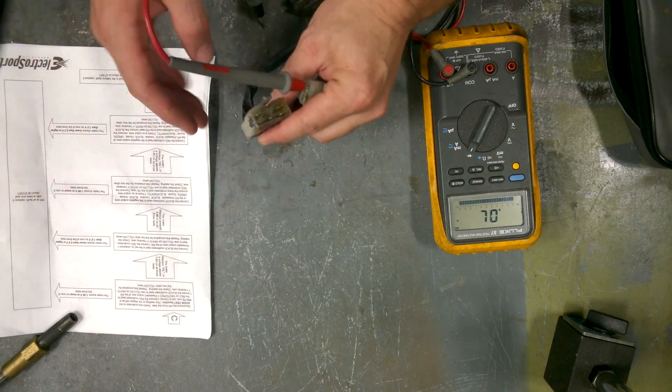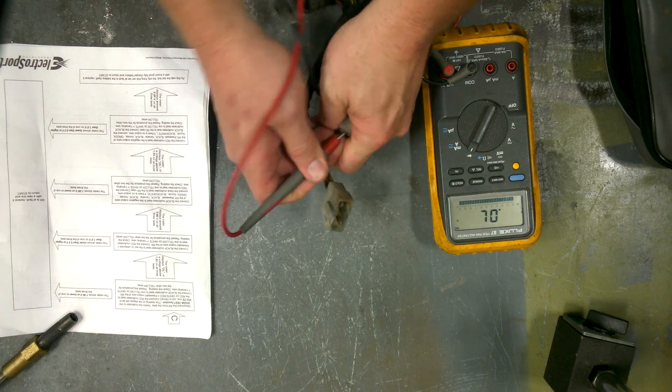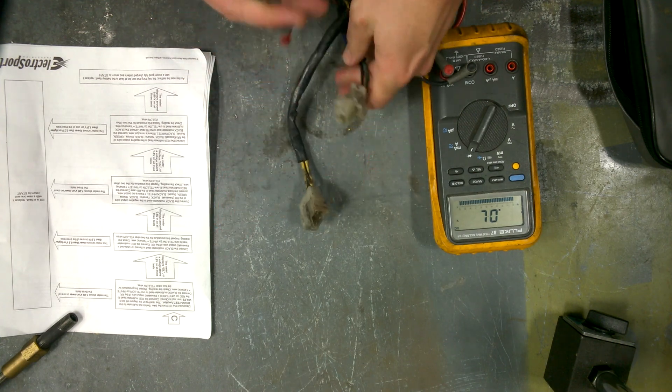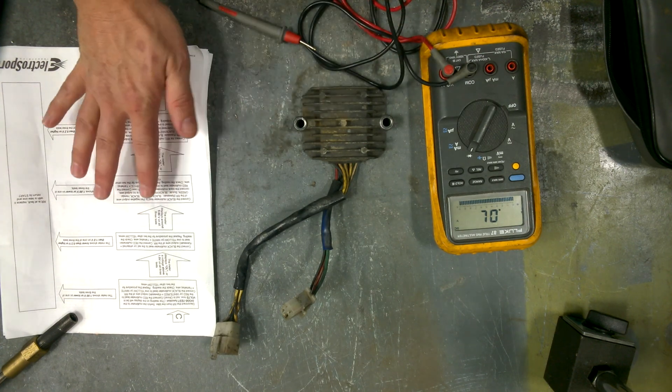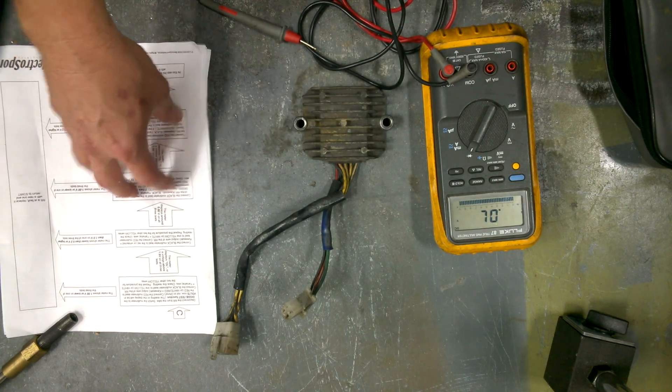And according to the flow chart, very good comprehensive flow chart. That's the diode test for motorcycle rectifier regulator. Like I said, there's a lot of other steps involved here, checking your rotor, checking your stator.